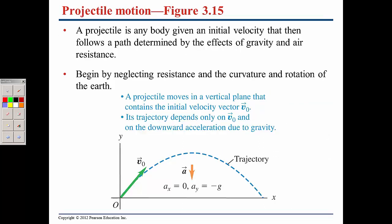Now, projectile motion. If you take any body and give it an initial velocity, its path is actually going to follow a parabola — that's going to be the trajectory. If you ignore the effects of air resistance, the only thing that acts on this ball in motion is going to be gravity. We're also neglecting the fact that the earth is curved and rotating a little bit.